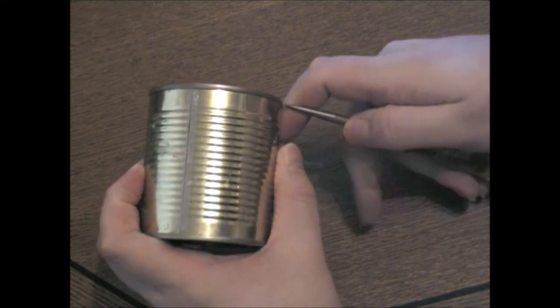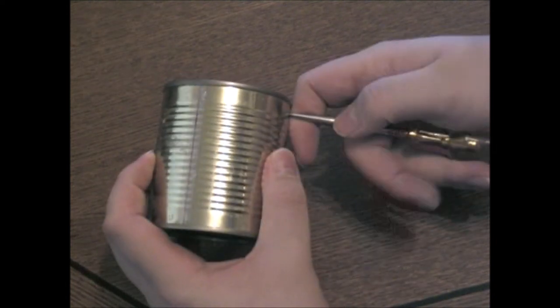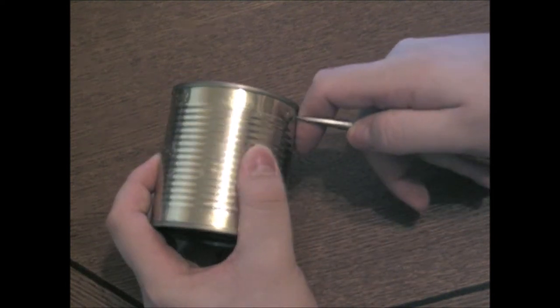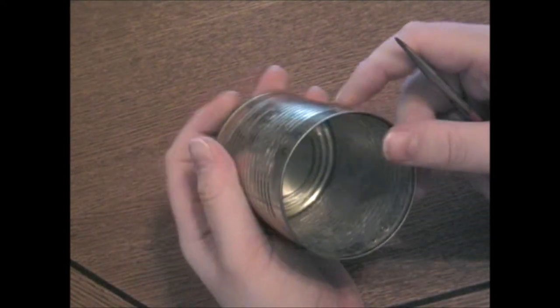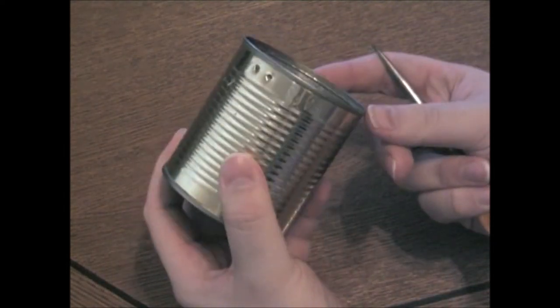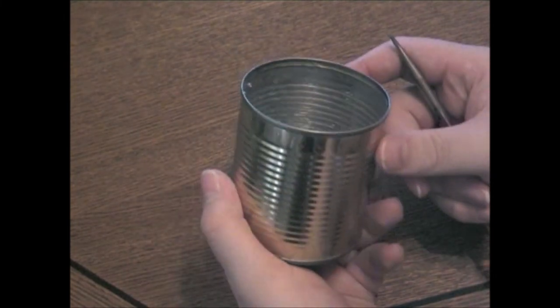In the next step, you need your pocket knife or the punch tool. And you make two small holes in the top of the can, just like this. Make sure the holes are equally spaced.